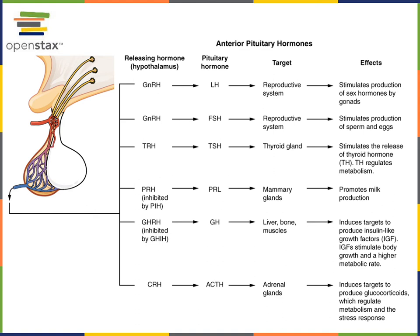Luteinizing hormone is another tropic hormone that regulates the gonads — the endocrine organs that produce the steroid sex hormones. Luteinizing hormone stimulates the production of testosterone in the testes in men. In women, luteinizing hormone stimulates ovulation and also stimulates the production of the steroid sex hormones progesterone and estrogen.